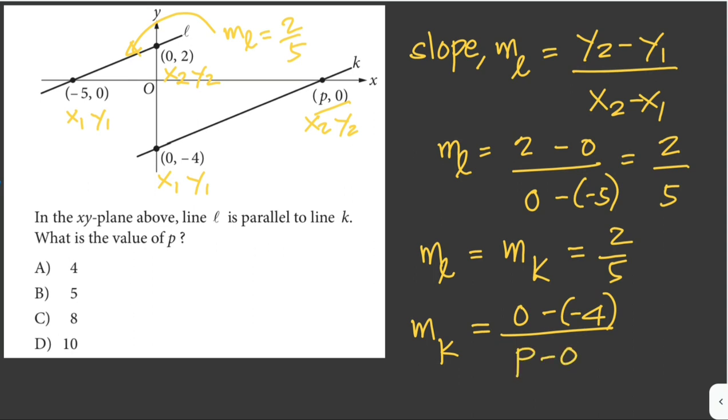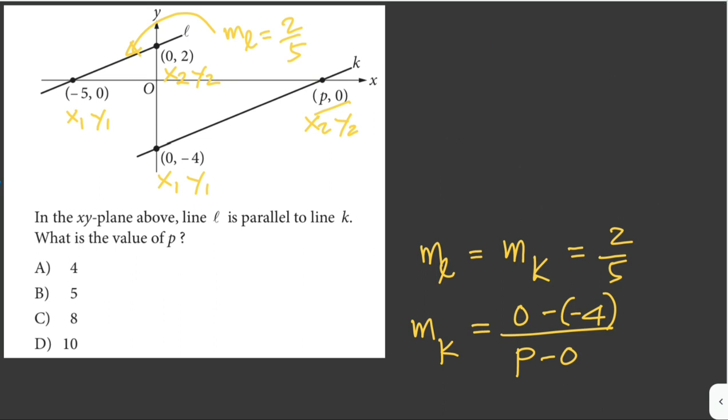And then substituting the value of the slope of K which is just equivalent to the slope of line L. So that is just 2 over 5 equals 0 minus negative 4 over P minus 0. So this is 2 over 5 equals 4 over P.